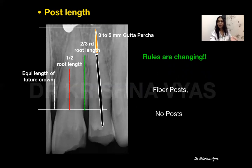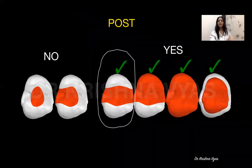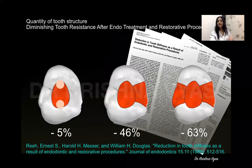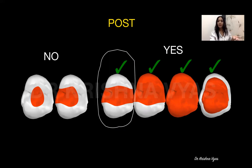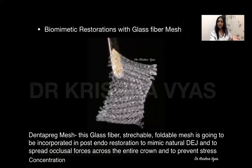The other concept is a no-post concept — where we don't give a post at all. Consider the situation: when you have an MOD cavity, fracture resistance is lost by almost 63%, so ideally this condition calls for post and core. But if the occlusal loads are minimal to moderate, we can avoid post and core and do biomimetic restorations. When we use a glass fiber mesh, it absorbs occlusal forces, distributes them evenly onto the entire occlusal surface, and prevents catastrophic fractures.